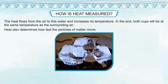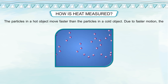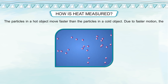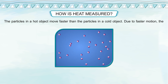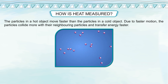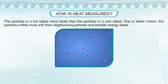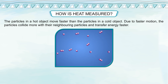Heat also determines how fast the particles of matter move. The particles in a hot object move faster than the particles in a cold object. Due to faster motion, the particles collide more with their neighbouring particles and transfer energy faster.